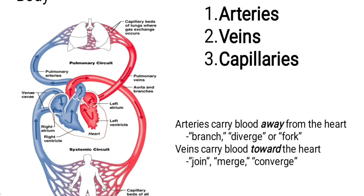Diverging means that different vessels emerge from one common point. The heart is one point from which different types of arteries emerge and branch out toward different parts of the body.